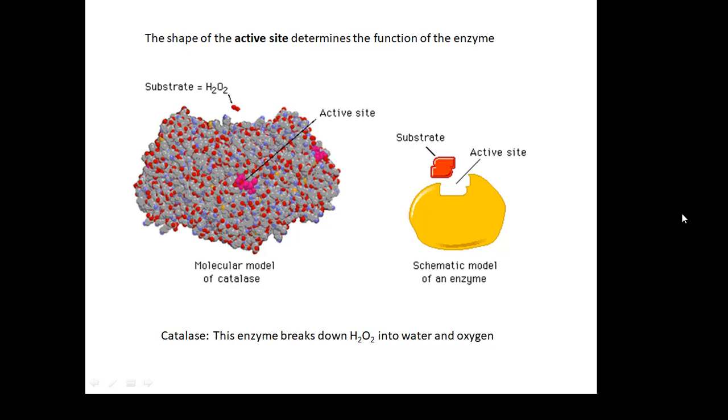The enzyme which does this is called catalase. This enzyme breaks down H2O2 into water and oxygen. You'll notice that this molecule, the hydrogen peroxide molecule, fits into the active site. The shape of the active site is very important.